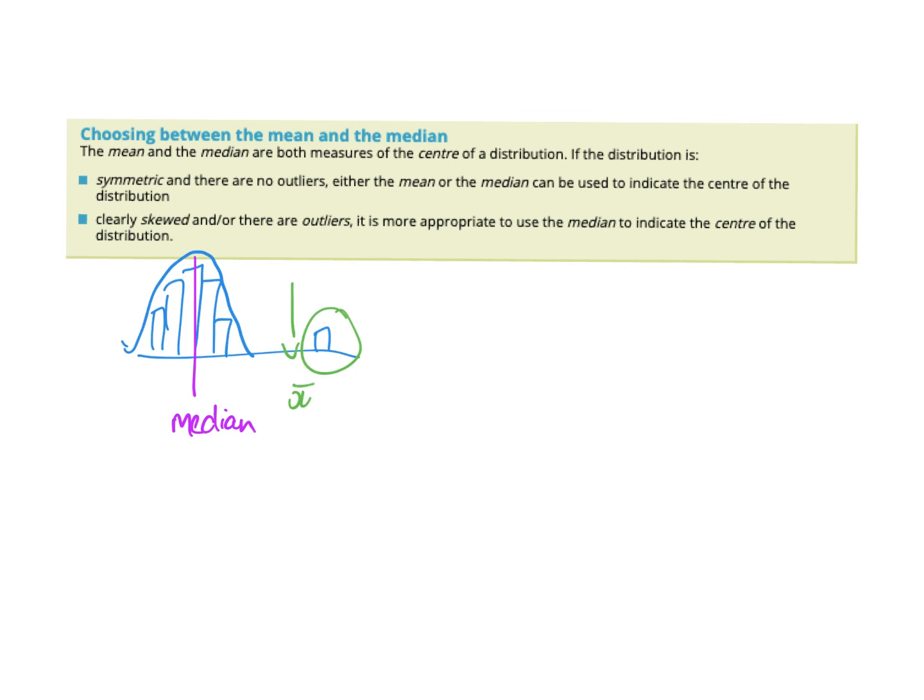So any skewed or outliers just use the median, but we're going to see a whole lot in our next lesson of symmetric data and we'll be using the mean and standard deviation to show you some other things.